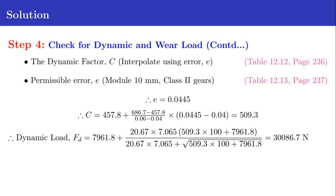The permissible error E can be obtained from table 12.13 in page 237. For module 10 millimeter, assuming grade 2 gears, the error E is 0.0445. By interpolating we can find out the value of C. C equals 457 plus (532 minus 457) divided by (0.06 minus 0.04) times (0.0445 minus 0.04). 457 is the C value corresponding to error 0.04, and 532 is the C value corresponding to error 0.06. By interpolating we obtain C equals 509.3.